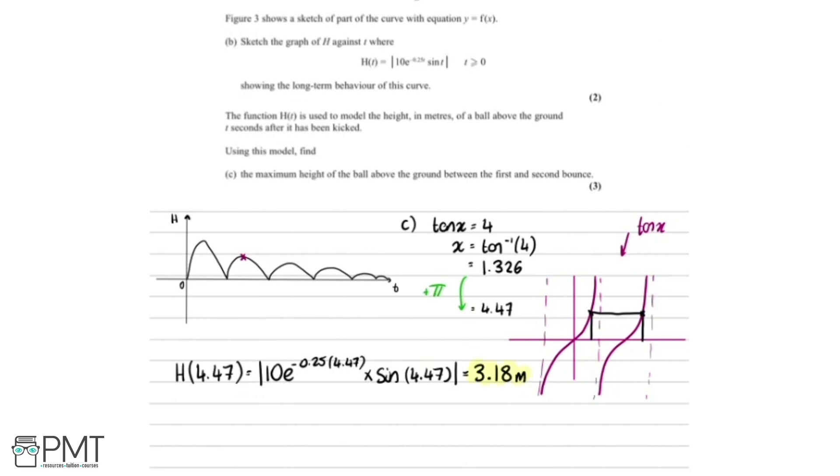For this question, we'll get one mark here for realizing that we need to solve tan(x) equals 4 and then substituting that into h(t). We get a second mark here for substituting the correct value into h(t) and then writing this part out here. Then we get the final mark for the correct answer of 3.18 metres.